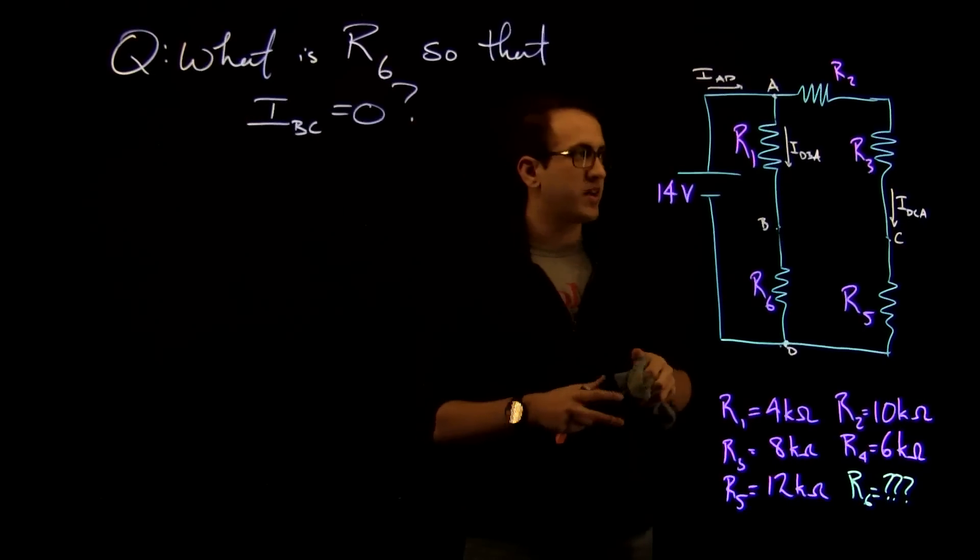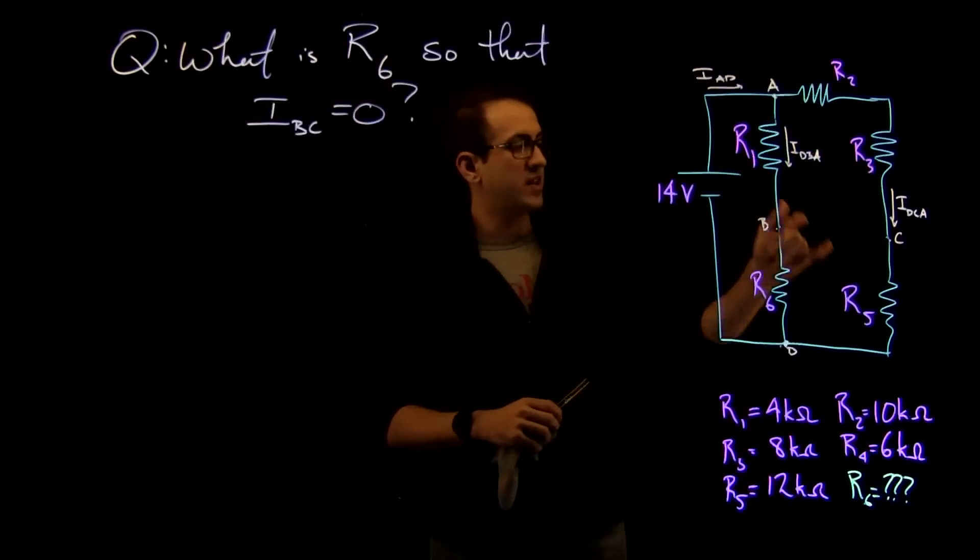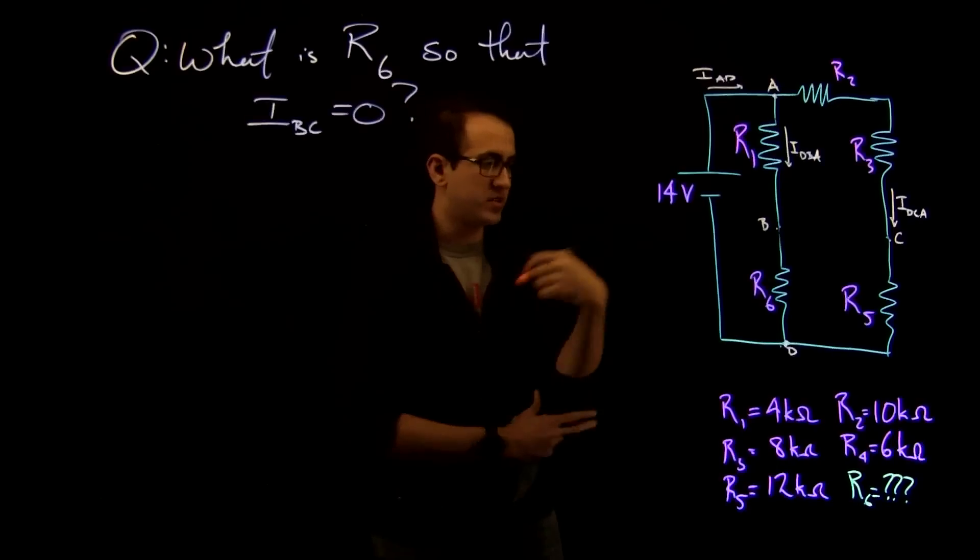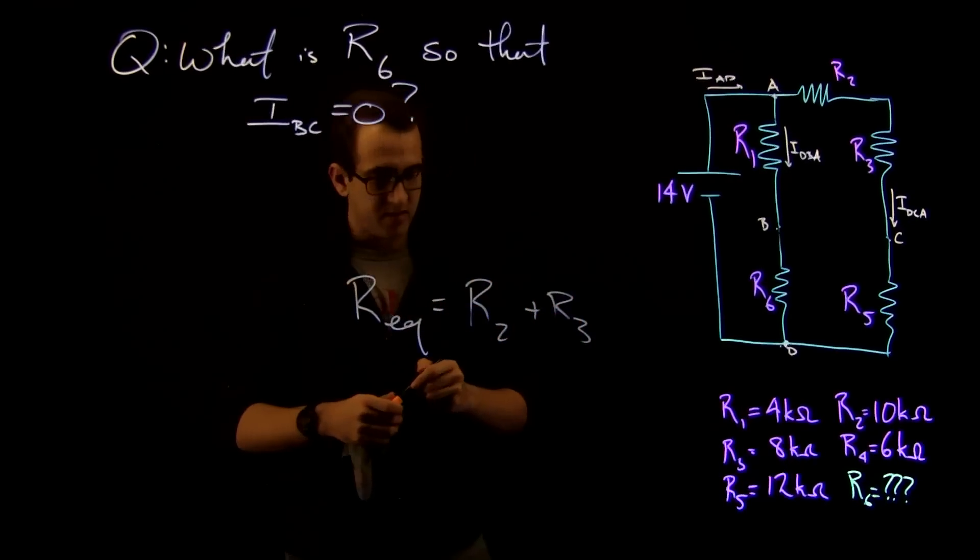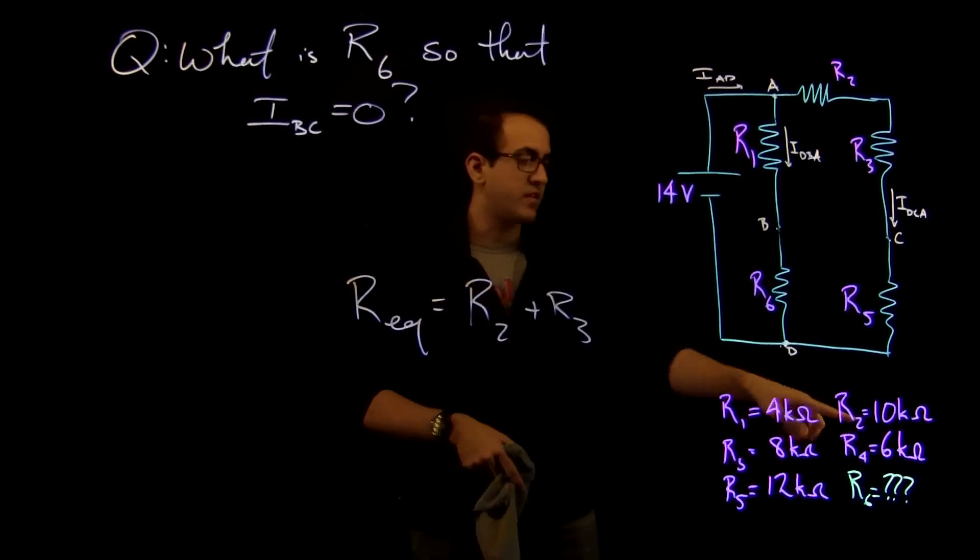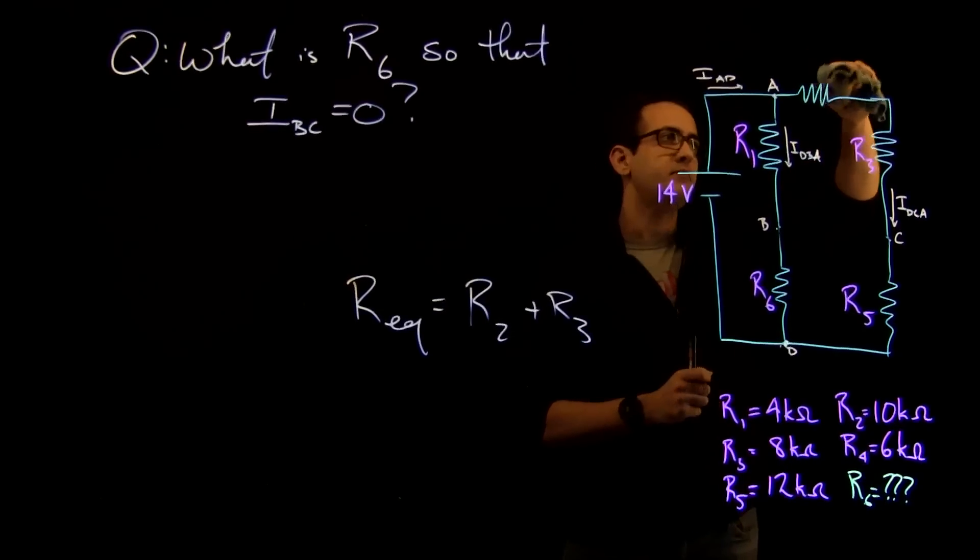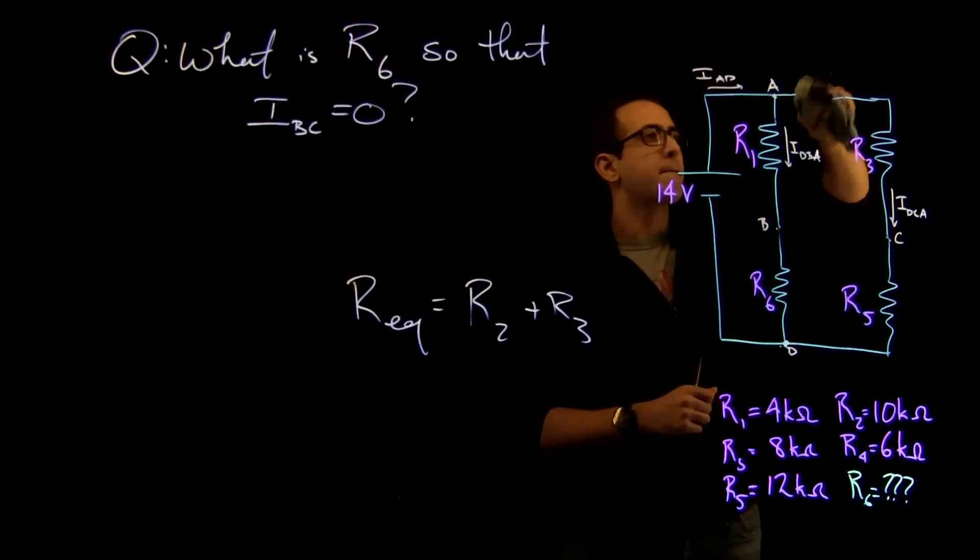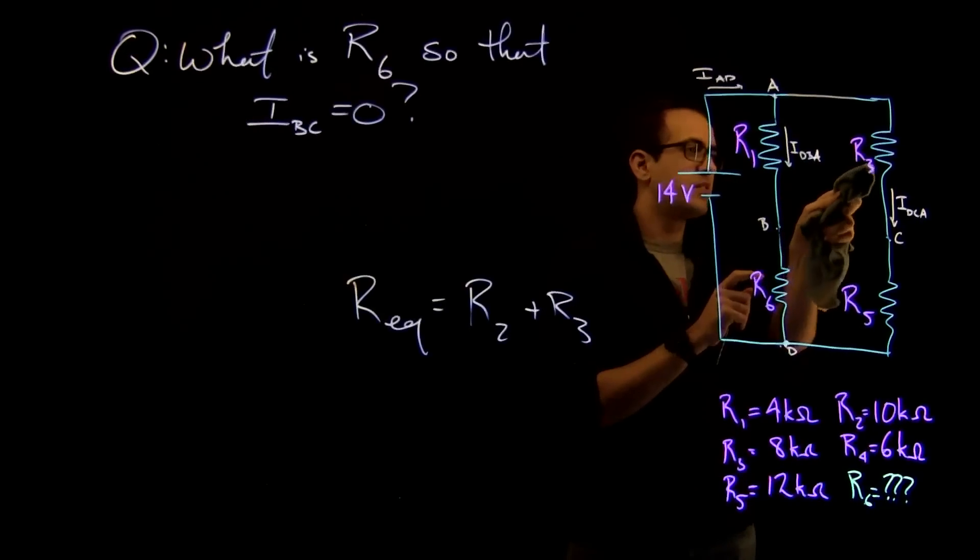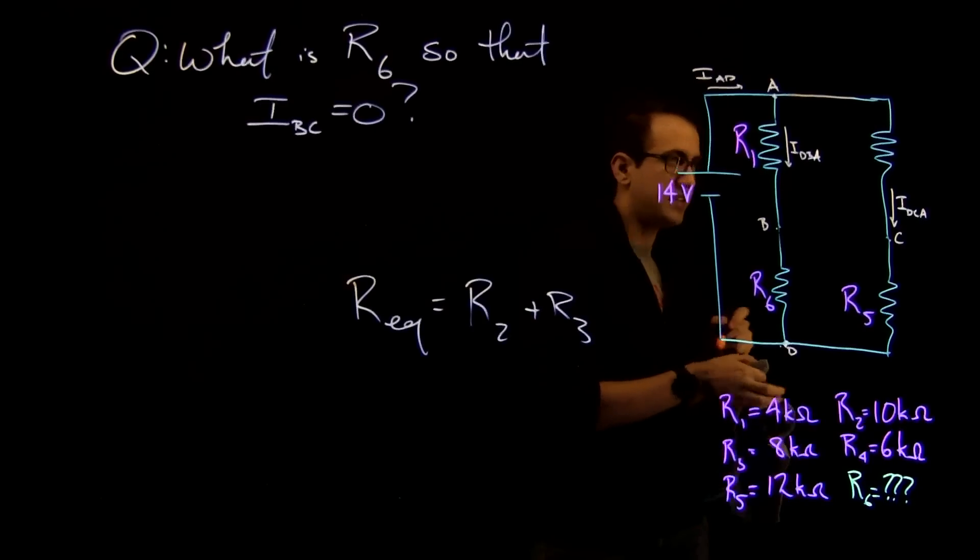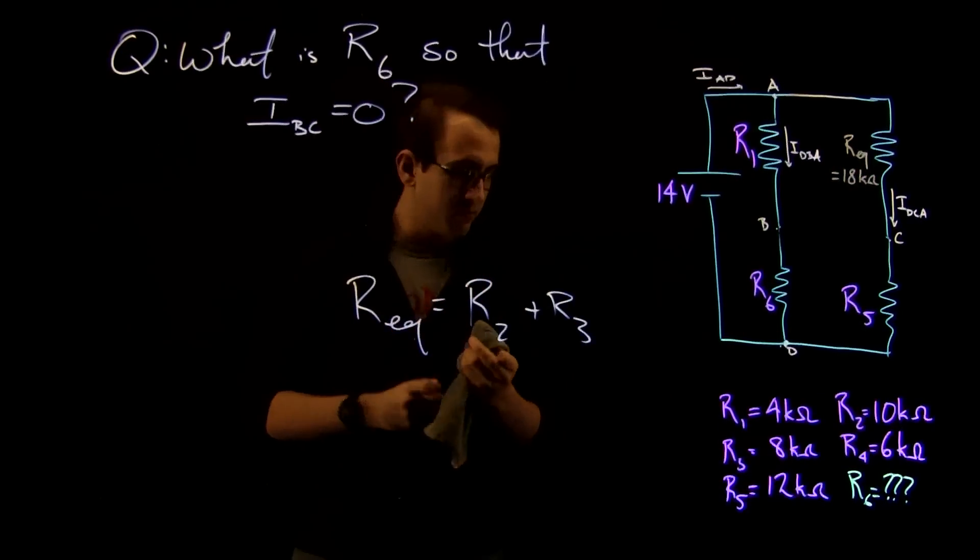So that's step one. Step two is recognizing we can simplify this down a little bit further because we know that R2 and R3 can be simplified to look more like the traditional Wheatstone bridge. So we know that the way resistors add in series is by taking the arithmetic sum. So REQ is R2 plus R3. You know that R2 is 10 kilo ohms and R3 is 8 kilo ohms. So let's call this REQ with a value of 18 kilo ohms.